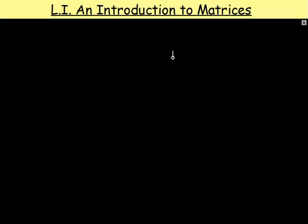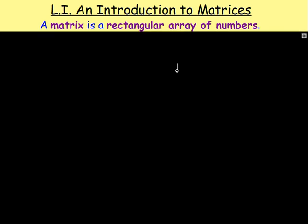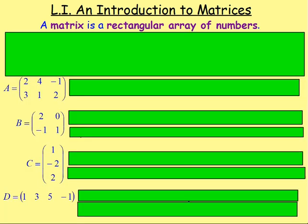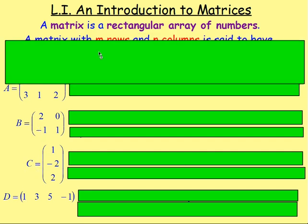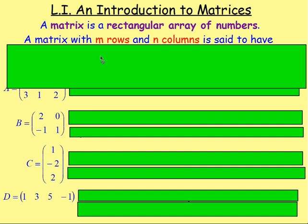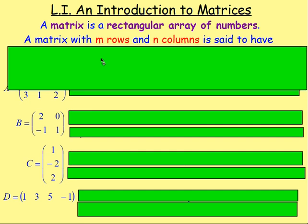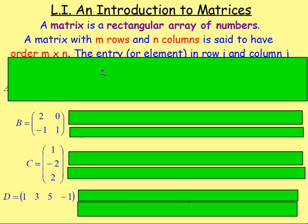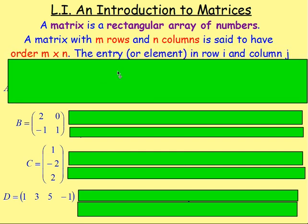So first of all, what is a matrix? Well, a matrix is a rectangular array of numbers, such as these matrices here: A, B, C and D. A matrix with M rows and N columns is said to have order M times N, or M by N.